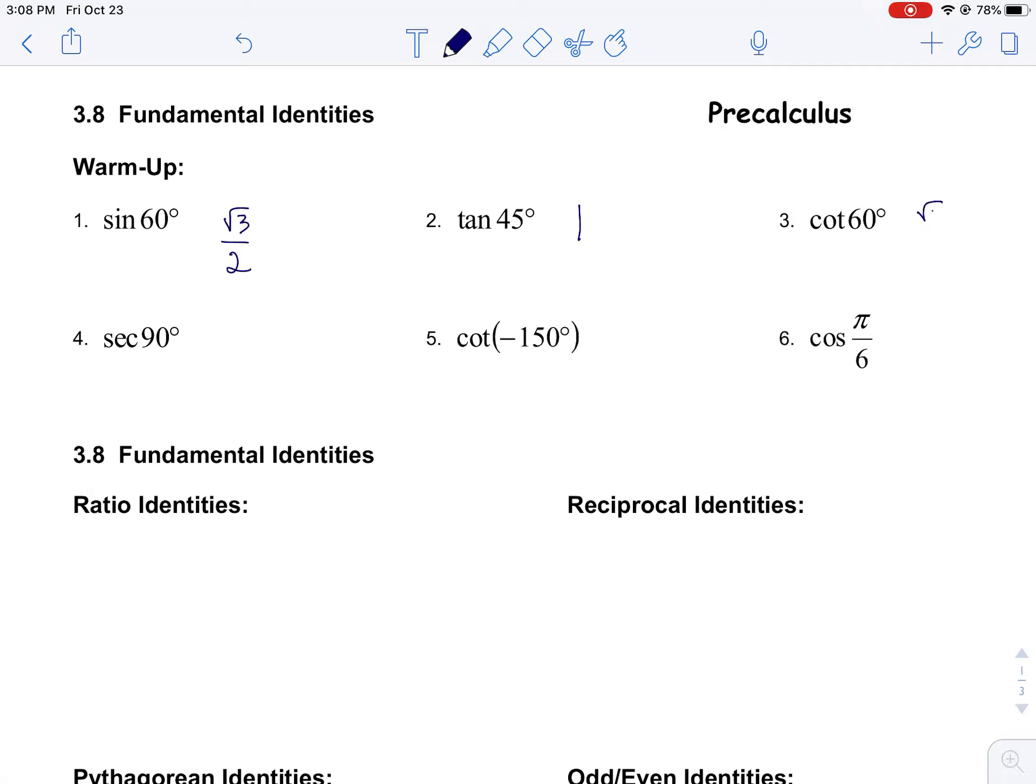The cotangent of 60° is the same as the tangent of 30°, that's root 3 over 3.